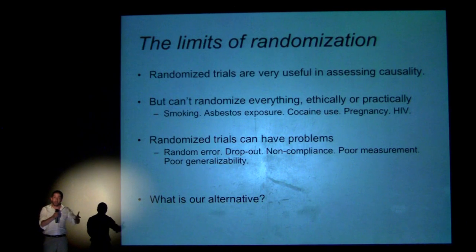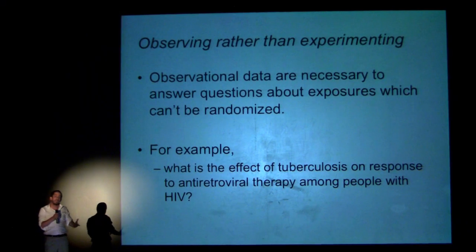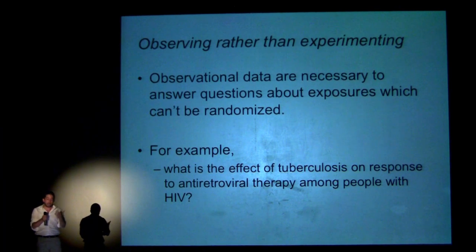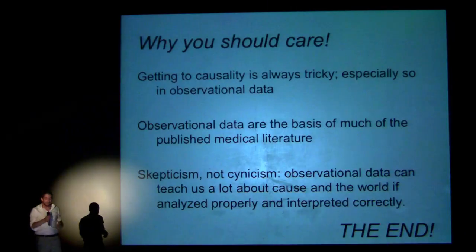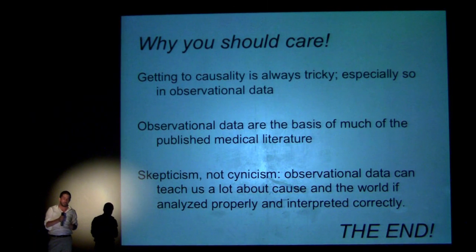But we can't randomize everything, either ethically or practically. We can't randomize people to become pregnant or to be exposed to asbestos. And randomized trials themselves have problems — random error and dropout. So what we can do instead is observe rather than experiment. Observational data are necessary to answer questions about exposures which can't be randomized. In conclusion, getting to causality is always tricky, especially in observational data. But observational data are the basis of much of the published medical literature, and I would urge skepticism rather than cynicism — observational data can teach us a lot about cause and the world if analyzed properly and interpreted correctly.